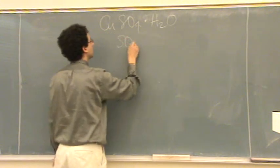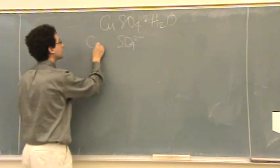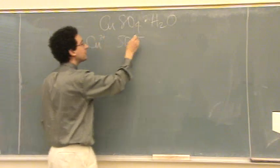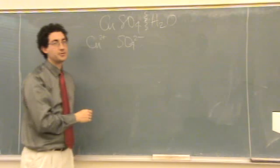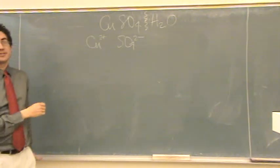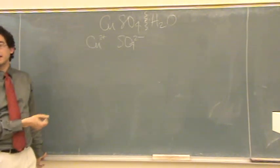Well, sulfate is 2 minus, so it has to be copper 2 plus. If you see this dot, just break it into two parts. It's kind of like they're glued together. Occasionally you'll see dots.